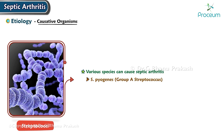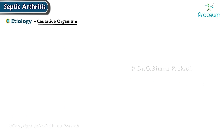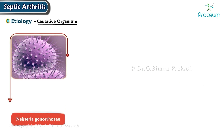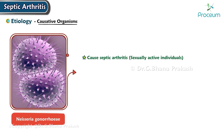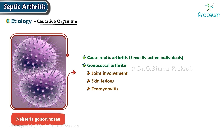Streptococcus pyogenes (Group A Streptococcus) and Streptococcus pneumoniae are among the common culprits. Neisseria gonorrhoeae can cause septic arthritis particularly in sexually active individuals. Gonococcal arthritis typically presents with joint involvement, skin lesions, and tenosynovitis.